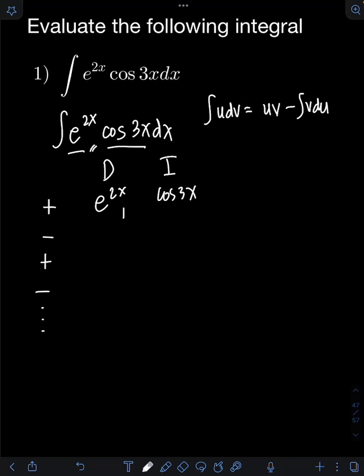Let's start differentiating e raised to 2x. Differentiating e raised to 2x gives e raised to 2x, and by the chain rule, we multiply by the derivative of 2x, which is 2. So we have 2e raised to 2x as the first derivative.